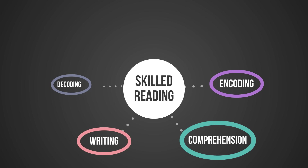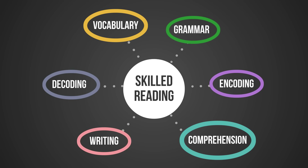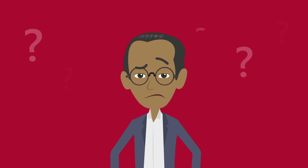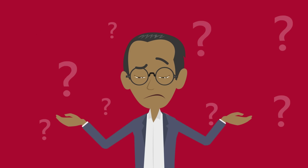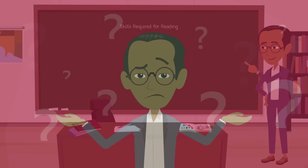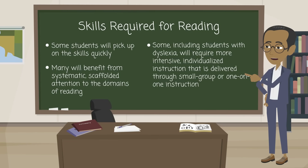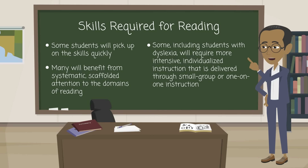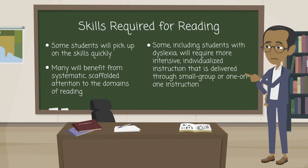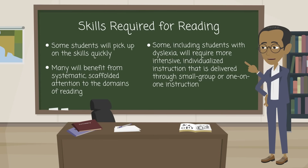Reading is a complex task consisting of overlapping and interdependent skills. Effective reading instruction capitalizes on these relationships while explicitly, systematically, and cumulatively teaching the sub-skills associated with the larger domains of skilled reading. If the majority of students appear to benefit from a structured approach to reading, what does this mean for students with dyslexia? The skills required for reading are the same for all students, but some will pick up on skills quickly, many will benefit from systematic scaffolded attention, and some — including students with dyslexia — will require more intensive, individualized instruction delivered through small group or one-on-one instruction.